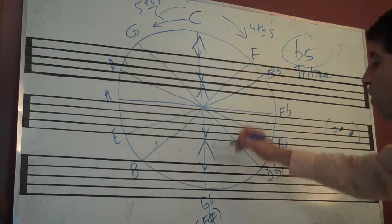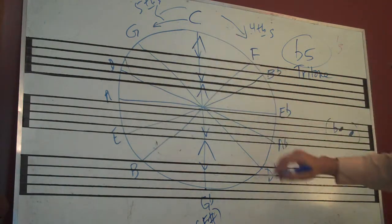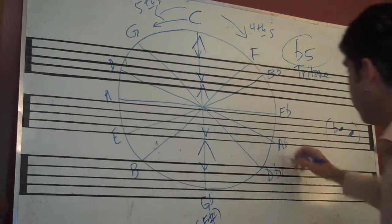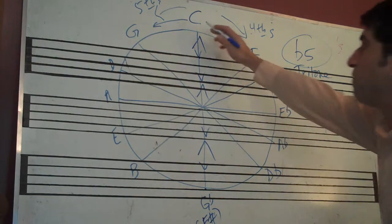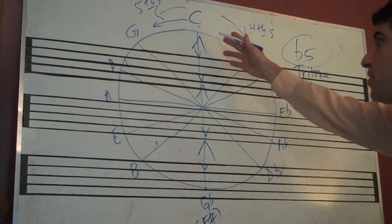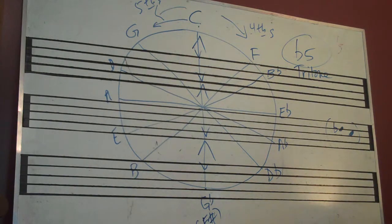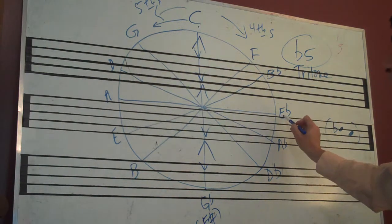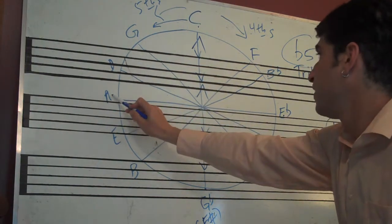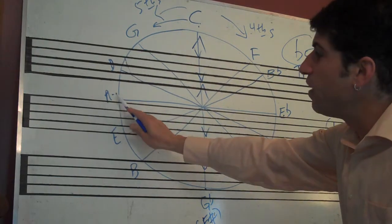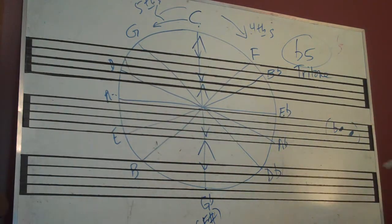There's C. If you look at it going the opposite direction, it is also a flat five going the opposite way. So it works both ways. E-flat to A is a flat five, and A to E-flat is a flat five, or a tritone.